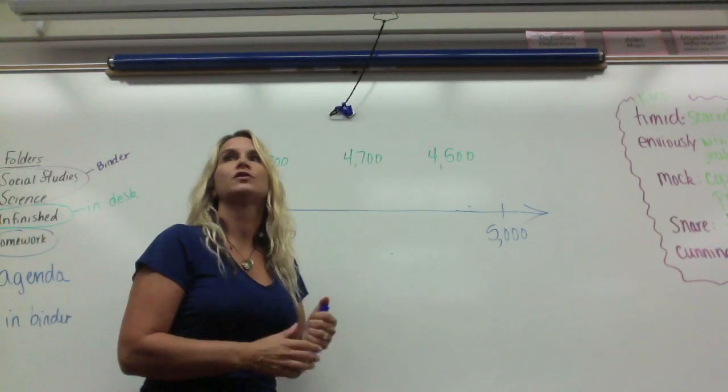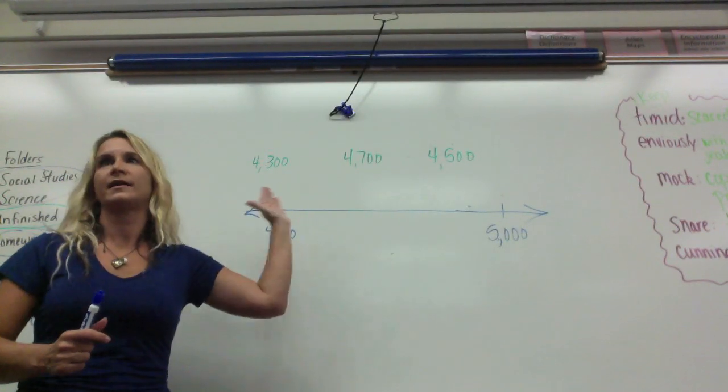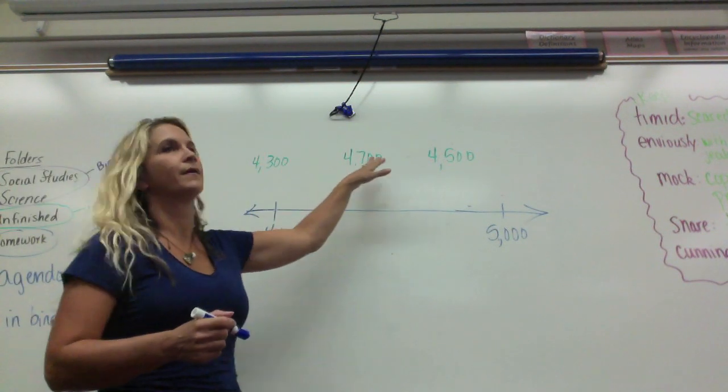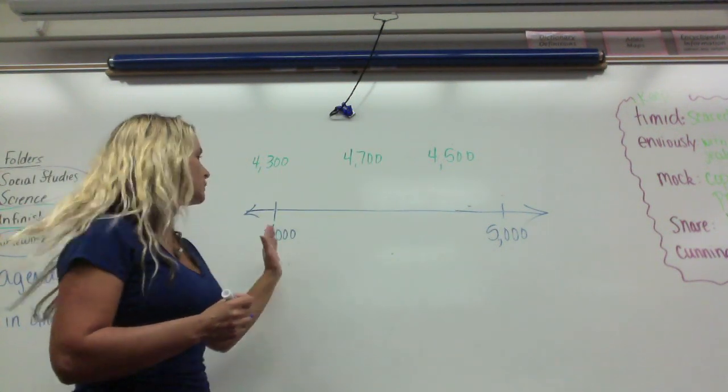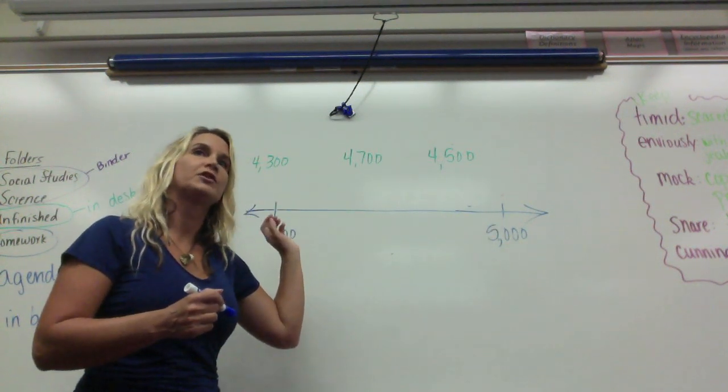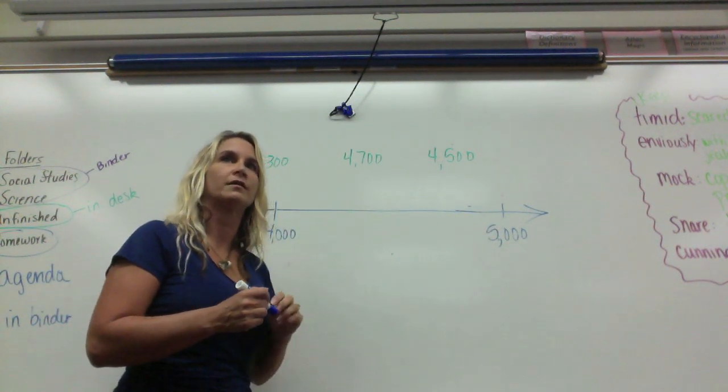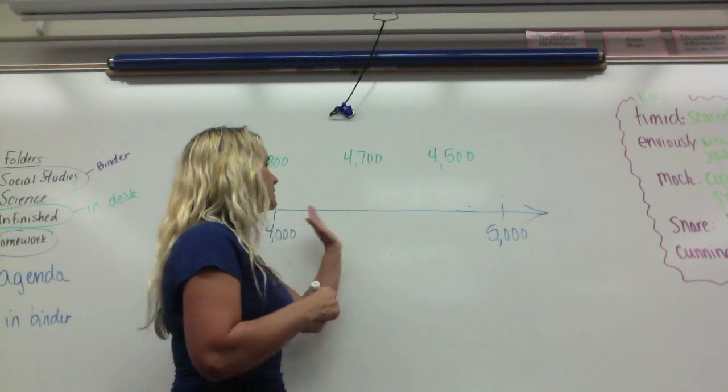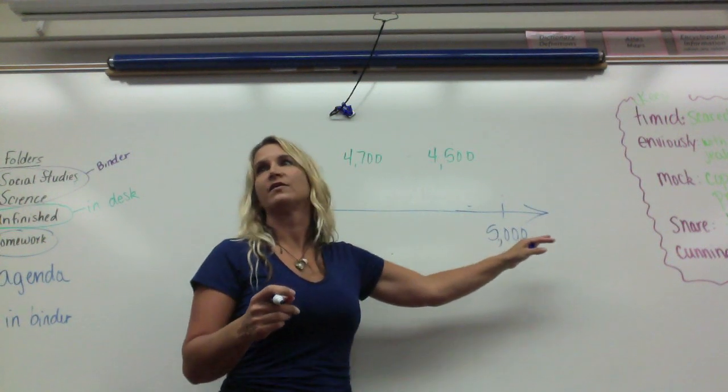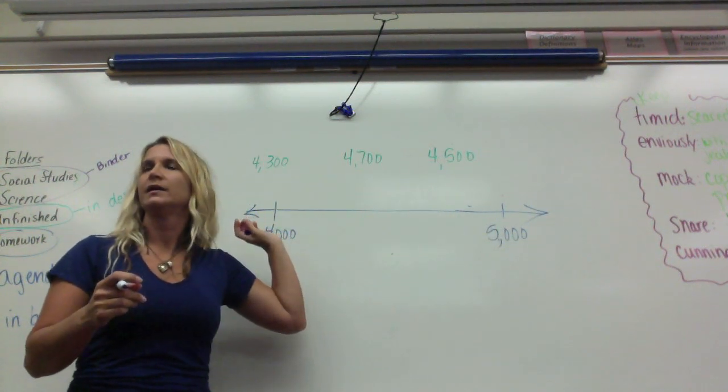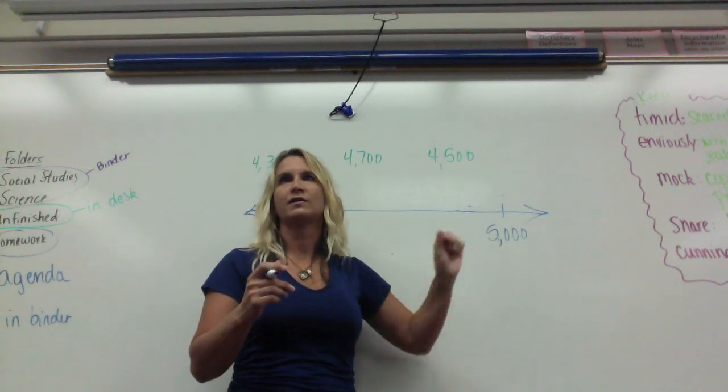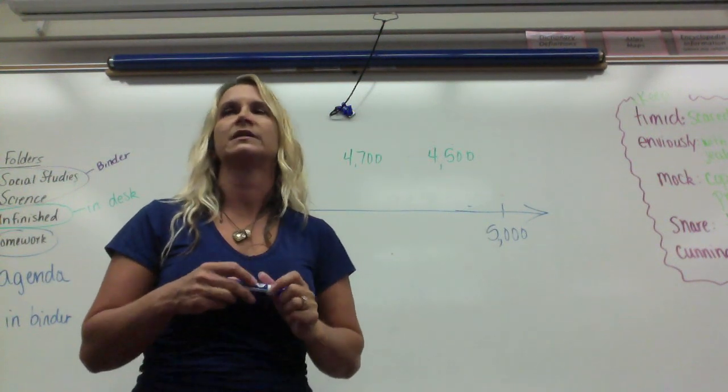Okay, do I have any students who have figured out how to make this number line work to be able to plot those numbers onto it? So you counted it by hundreds to get to 5,000. What do you mean? What did you actually do to the number line? So you put some lines in the middle of the number line.